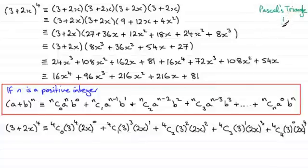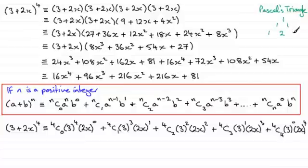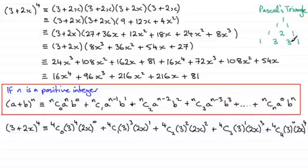We write 1, then 1, 1. The next line — suitable when working with to the power 2 — we write a 1 here, add these two numbers together giving us 2, then put a 1 on the end. When dealing with the power 3, the next line is 1, 3 — add these two numbers together to put 3 there, add these two together: 3, and then put a 1 on the end. These values are for when we've got 3.